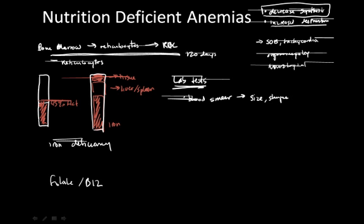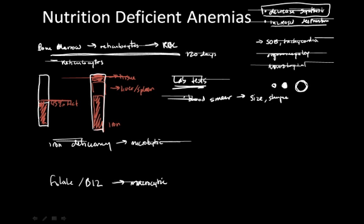The blood smear is one of the major ways to distinguish between iron deficiency and folate/B12 deficiency. Iron deficiency causes microcytic anemia, whereas folate and B12 deficiency causes macrocytic anemia. This refers to the fact that in iron deficiency red blood cells are generally smaller than normal, whereas in folate and B12 deficiency they are generally bigger.